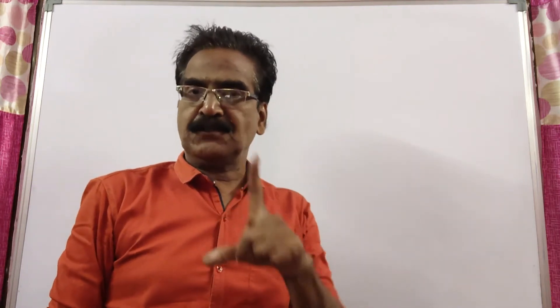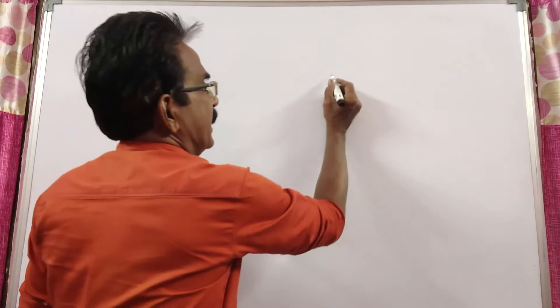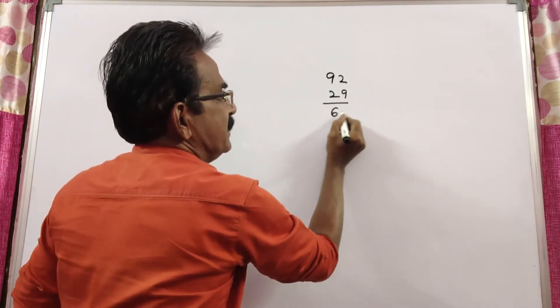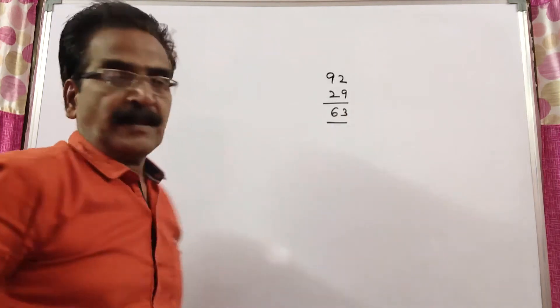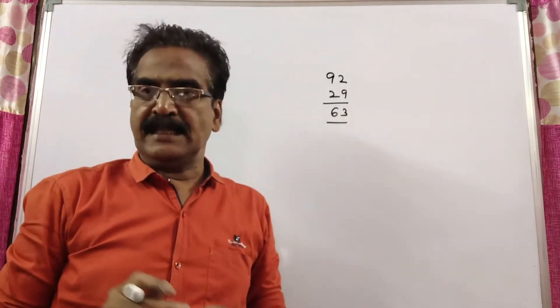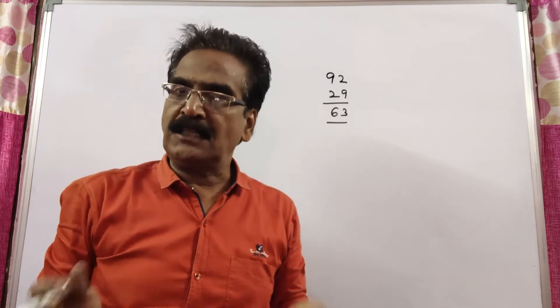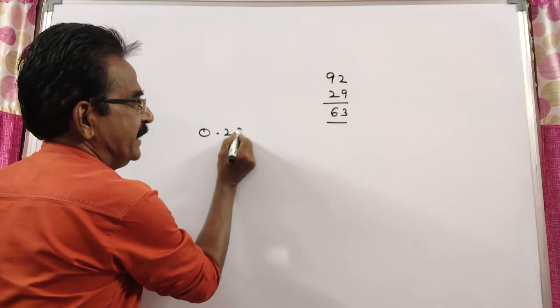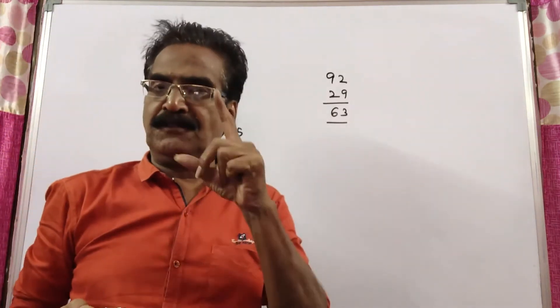See friends, the mass of a student was wrongly entered as 92 instead of 29. That is 63 more. So, due to this, the average mass of all the students is increased by 0.25. Then what is the total number of students?